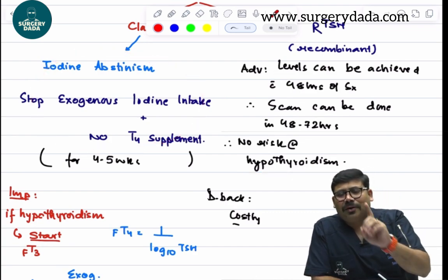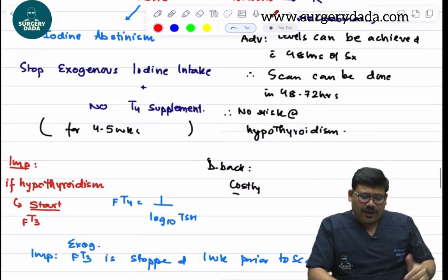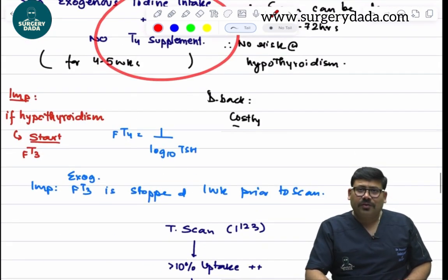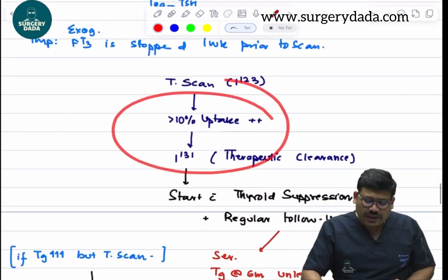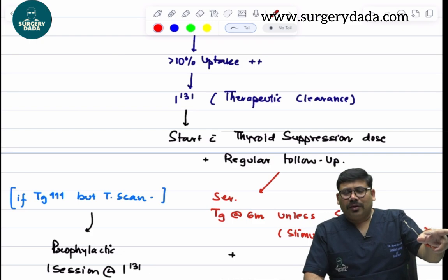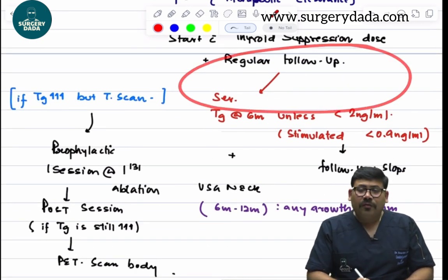We keep away from exogenous iodine and T4 supplementation for 4 to 5 weeks, then we plan a scan. If the uptake is more than 10%, we go for therapeutic clearance with iodine-131. If it is not, we start with follow-up and thyroid suppression.